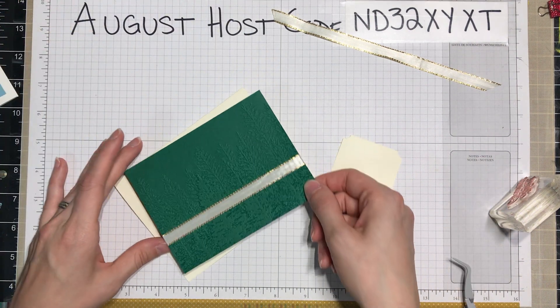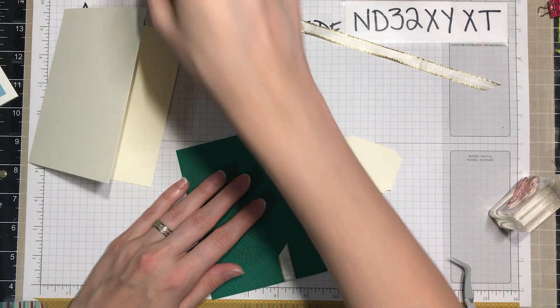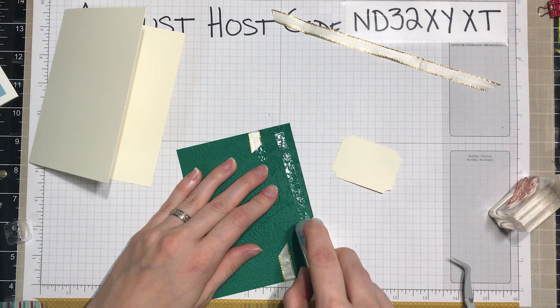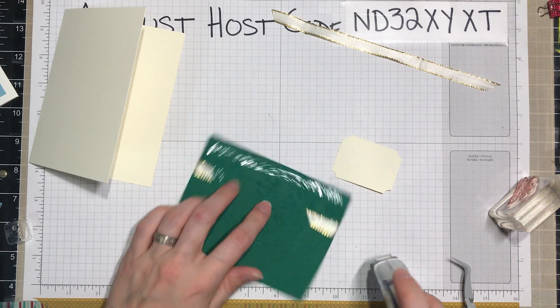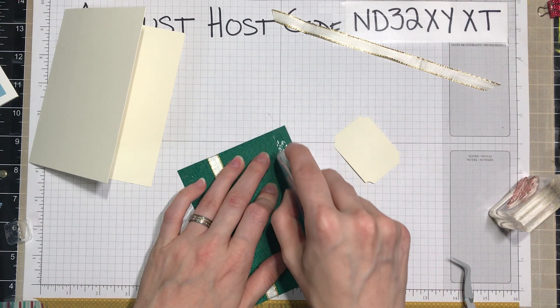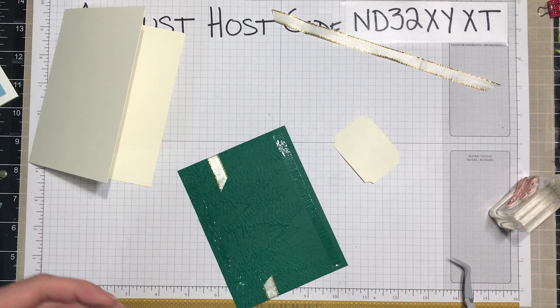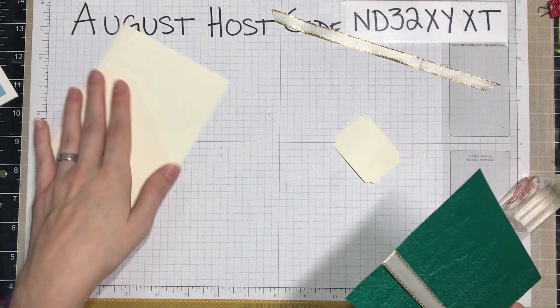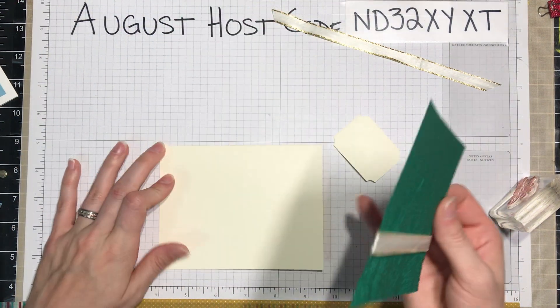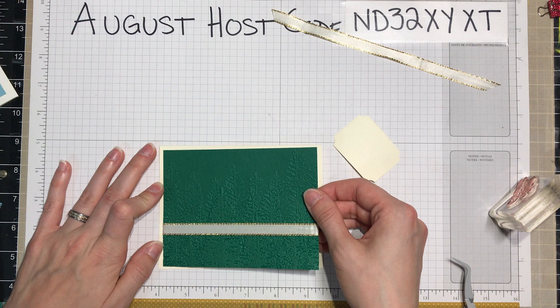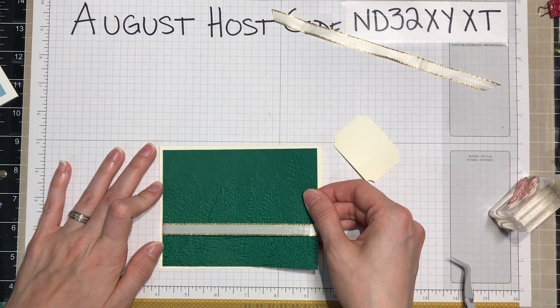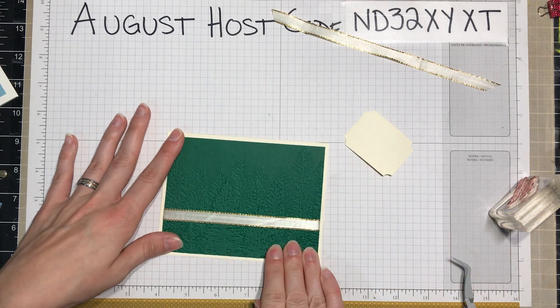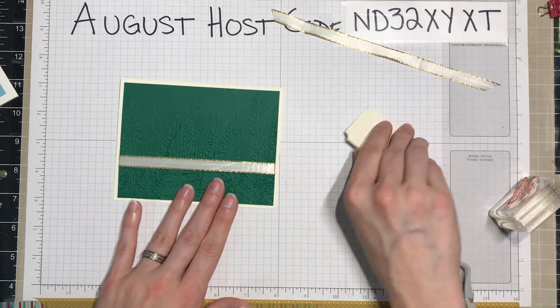So before we do that though, let's go ahead and adhere this to our card base. Let's also use the stamp and seal plus because of that embossing there. And we'll just nice and to the top. So I thought this kind of landscape look would look really nice with this card base. Push that down and that looks great.